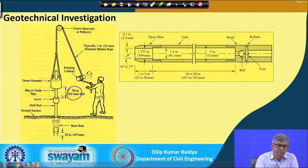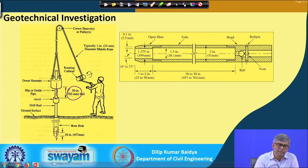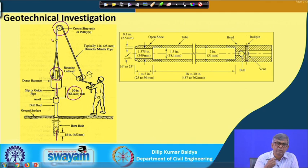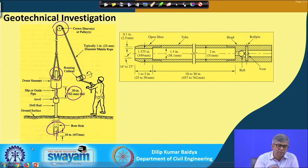So the height is 750 millimeters — if converted from inches it becomes 762, but 750 is also acceptable. There will be some mechanism to lift the weight and then allow it to fall onto the anvil. When this weight falls with that much energy, it automatically pushes the sampler downward. There are different types of arrangements for lifting and falling, and different borehole diameters are all variables in the test.